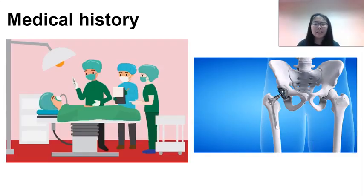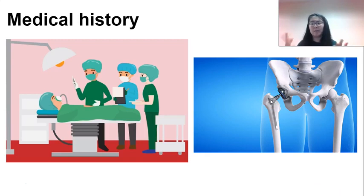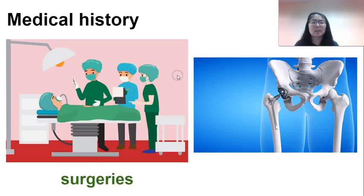Your doctor also needs to know about any surgeries you have had — when they cut you open, fix you, and put you back together. For example, if you have a new hip, your doctor needs to know, because they might give you medicine that doesn't work because of that surgery, or try to put you in a magnetic machine — which would not be good.